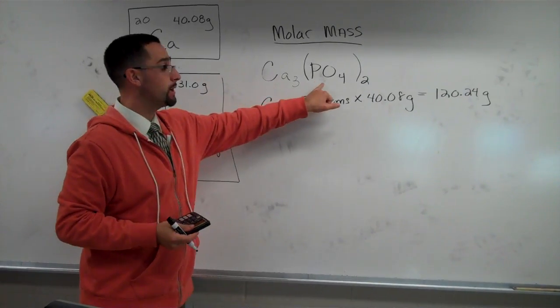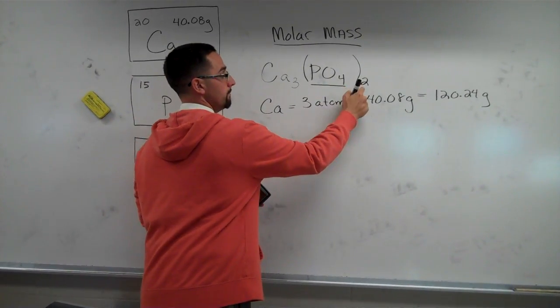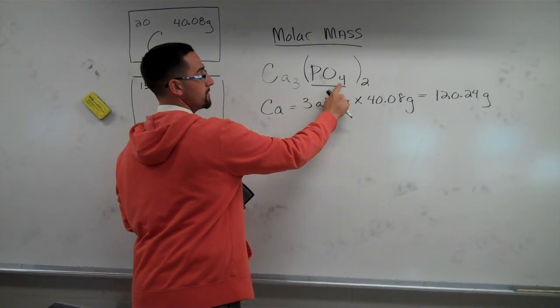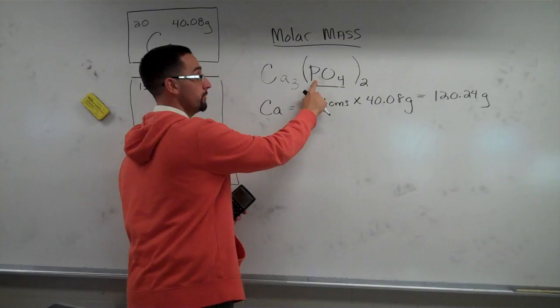Okay, next we have a phosphate ion here, PO4, but we have to keep in mind that we have two of those. So we have to distribute this two to the four and to the one, understood.